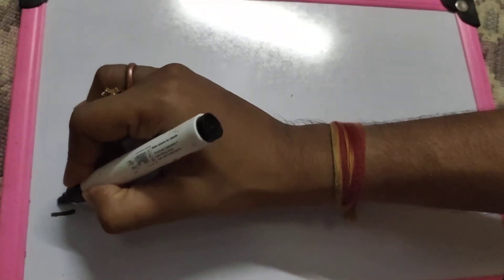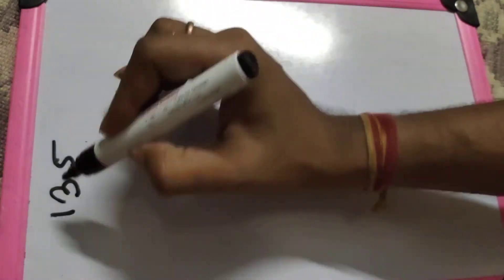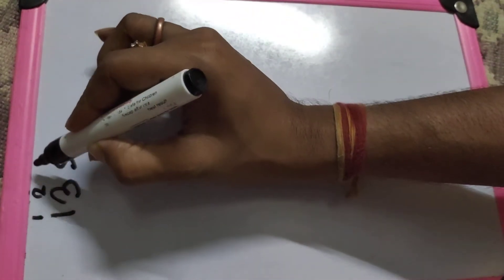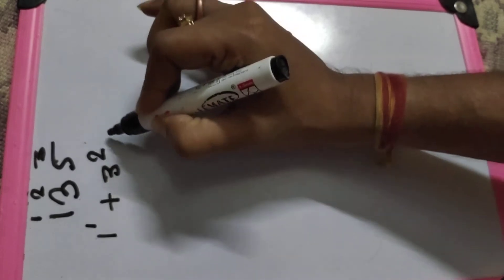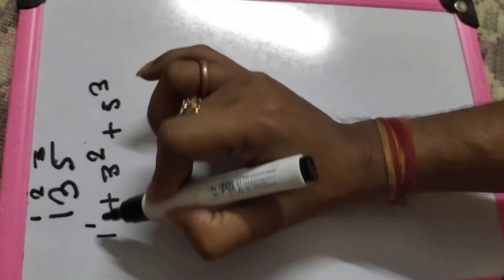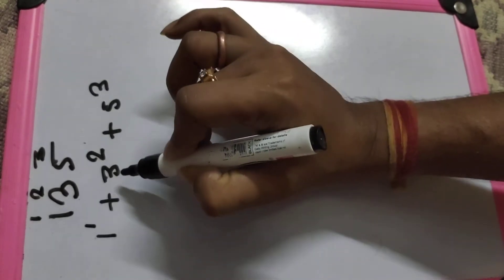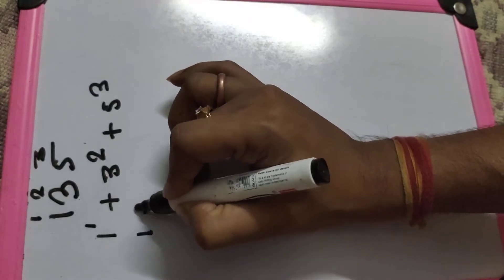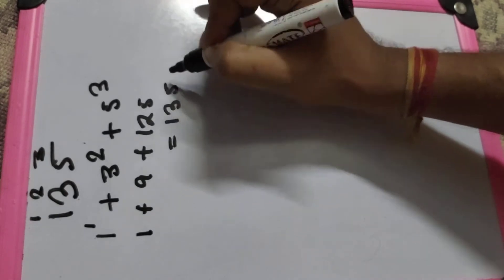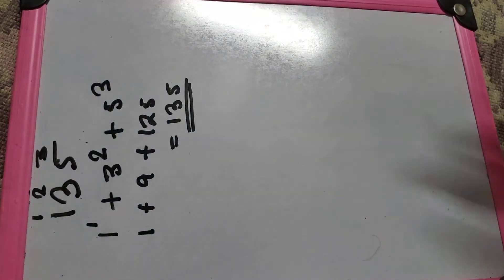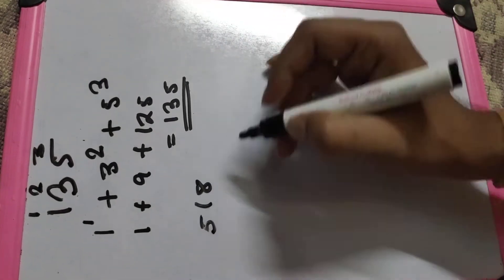Let's take an example. If we accept a number like 135, the respective positions are position one, position two, and position three. So we compute 1 to the power 1, plus 3 to the power 2, plus 5 to the power 3 — that is 1 plus 9 plus 125 — which gives us 135. That means 135 is a Disarium number.